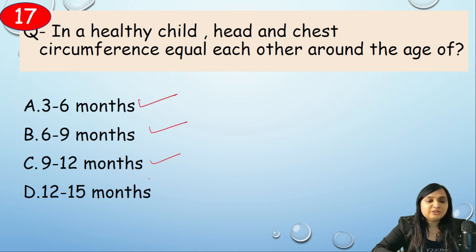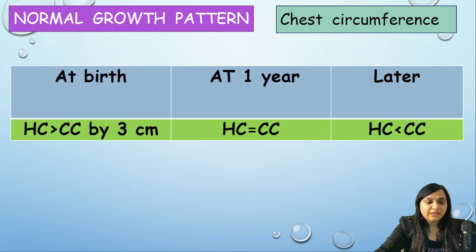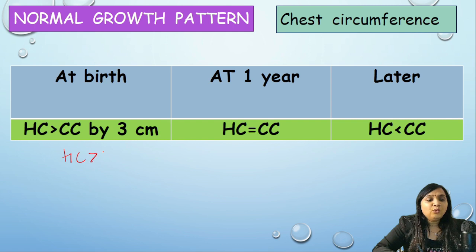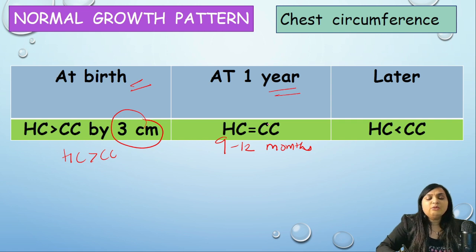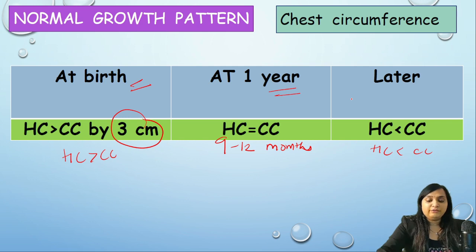Head circumference and chest circumference equal each other at what age — 3 to 6 months, 6 to 9 months, 9 to 12 months, or 12 to 15 months? Correct answer: option C, 9 to 12 months. At birth, HC exceeds chest circumference by 3 cm. Between 9 to 12 months HC equals CC. After that, HC becomes less than CC for the rest of life.